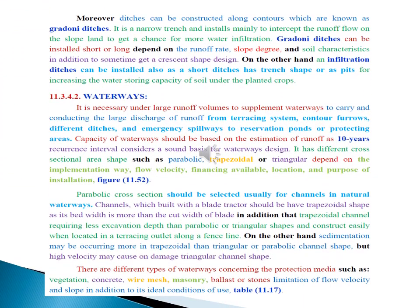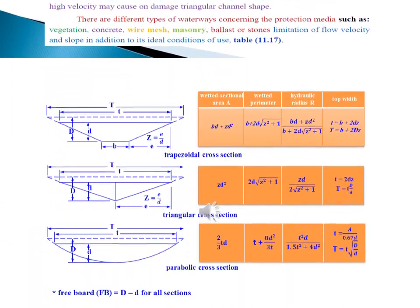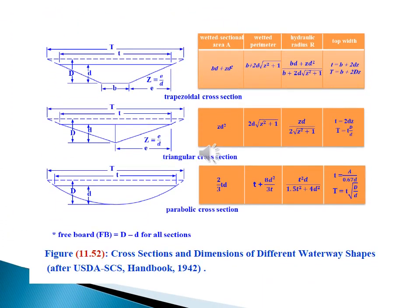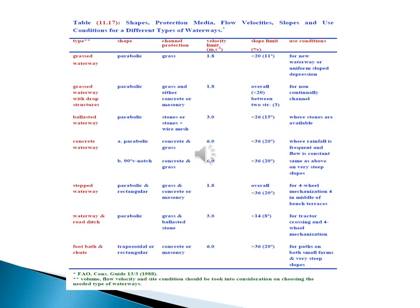Waterways. Really, it is necessary under large runoff volumes to supplement waterways to carry and conduct the largest discharge of runoff from terracing systems, contour fields, different ditches and emerging spillways to reservation ponds or protected areas, as shown in the enclosed figure and table. Figure showing cross sections and dimensions of different waterway shapes. An important table showing shapes, protection media, flow velocity, slopes, and use conditions for different types of waterways.